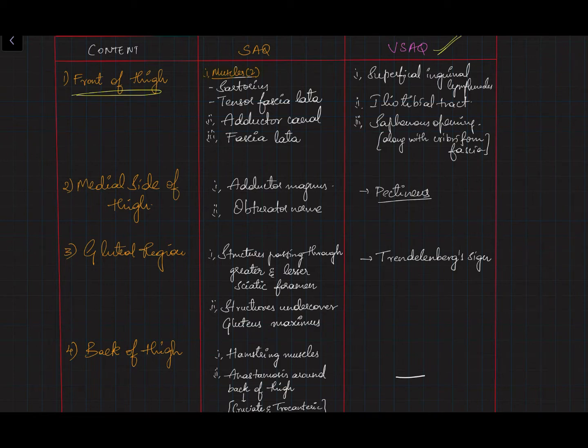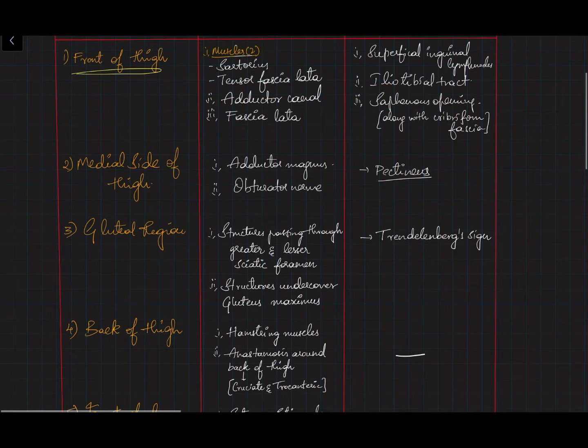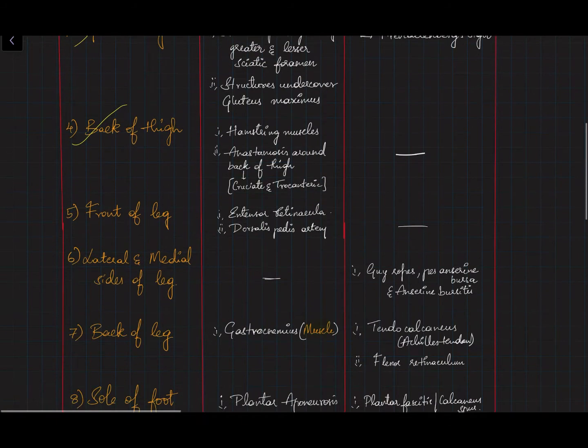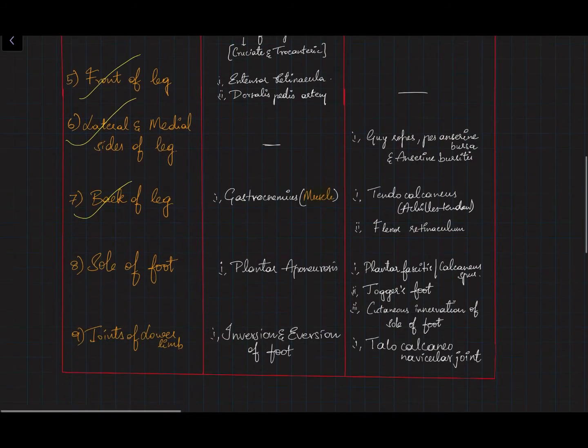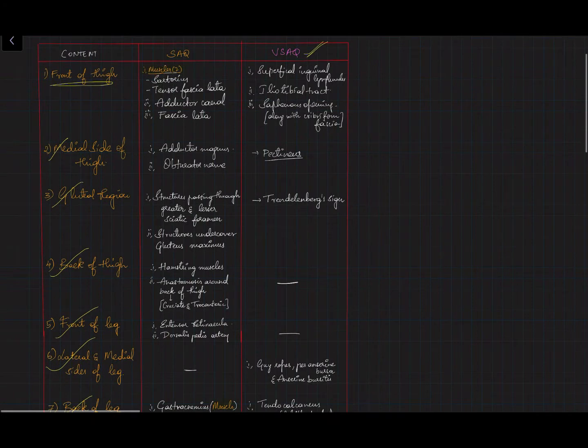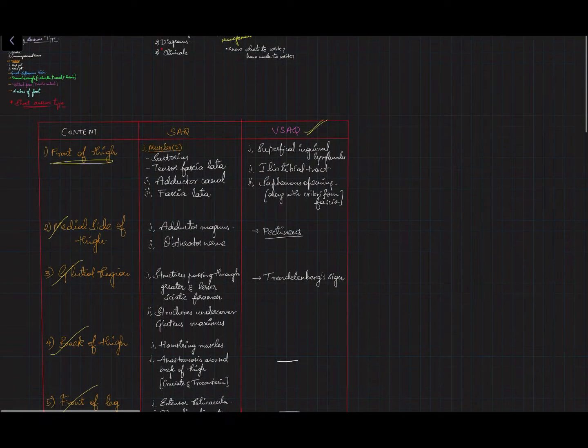I did it for every chapter. If you see here, it is medial side of thigh, gluteal region, back of thigh, front of leg, lateral medial side of thigh, back of leg, sole of foot, and joints of lower limb. In this way, I made SAQ and VSAQ, so hope it will help you.